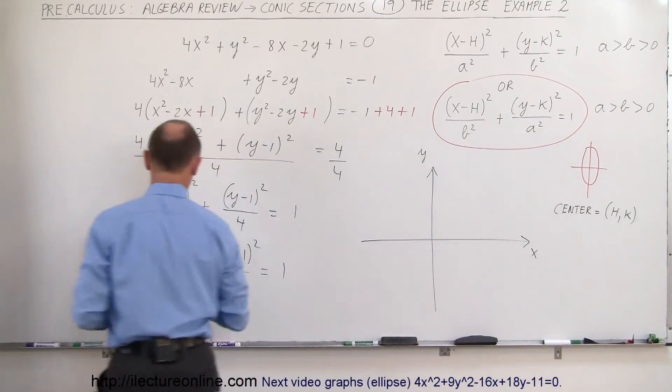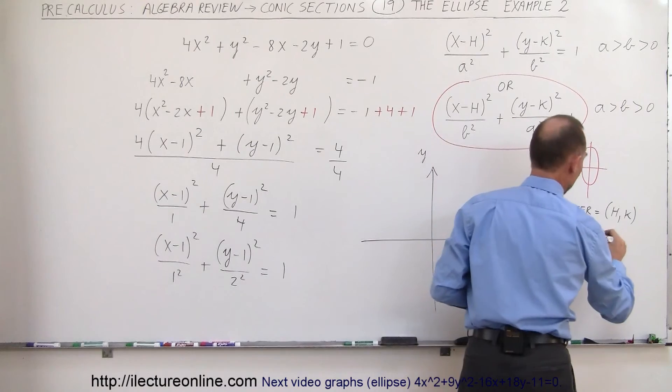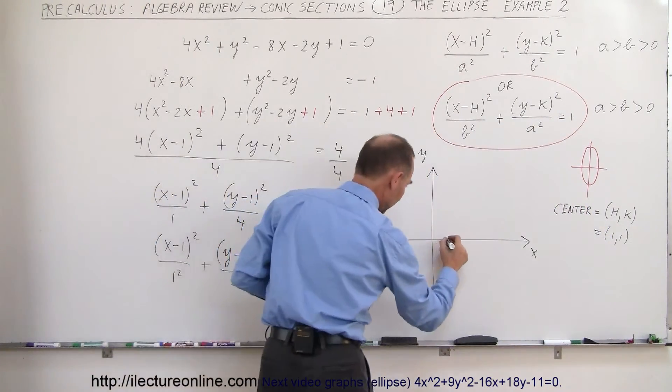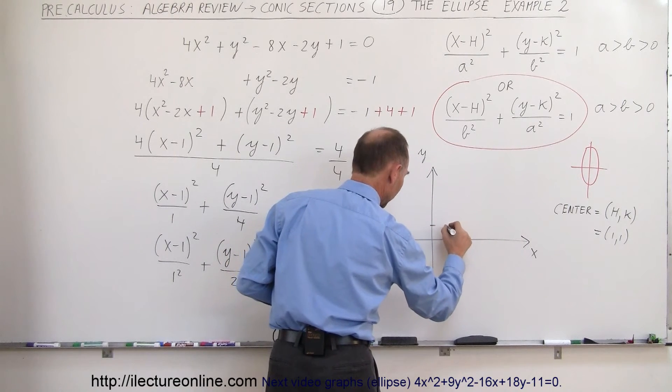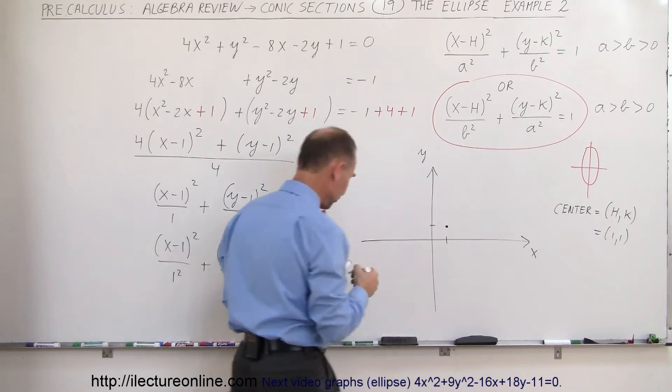Notice my h is right here, 1, my k is 1, so the center of the ellipse will be at 1 and 1. We'll go ahead and place it right here. So there's my 1, there's my 1, so there's the center of the ellipse and I know it's going to be drawn in a vertical direction.